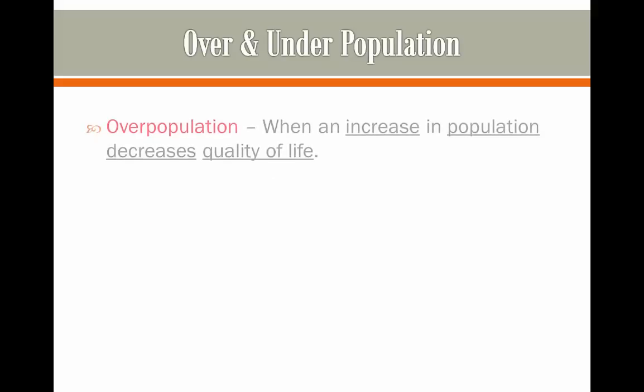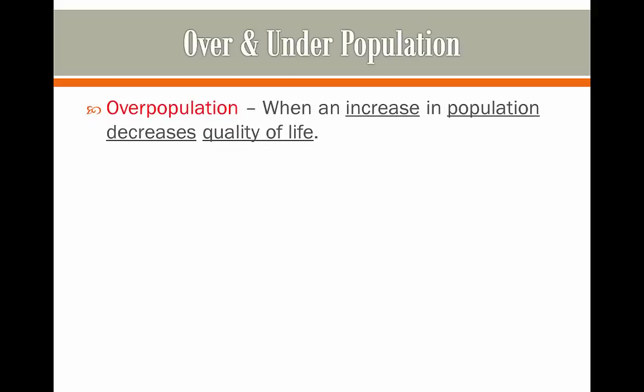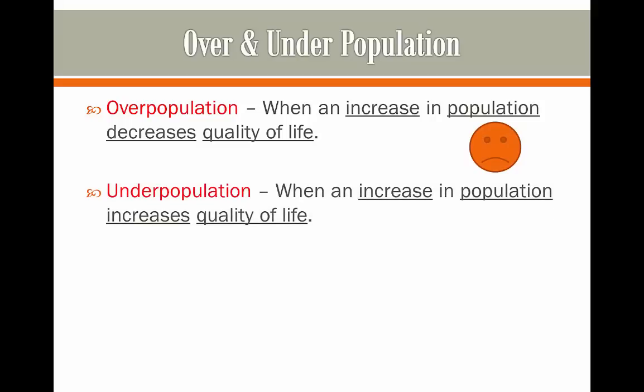An area that is overpopulated is when there's an increase in population which leads to a decrease in the quality of life, because more people coming into the population means more pressure on resources for everyone. Underpopulation is when an increase in population leads to an increased quality of life, because more people can share out the resources and there's better welfare in total.